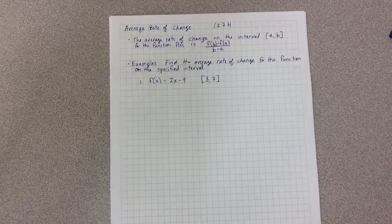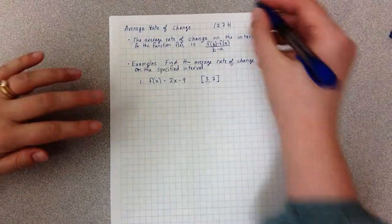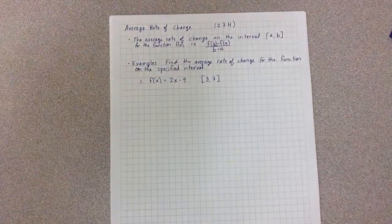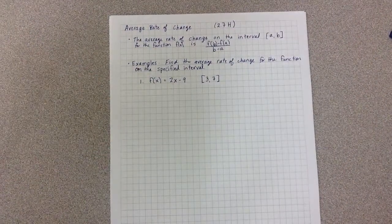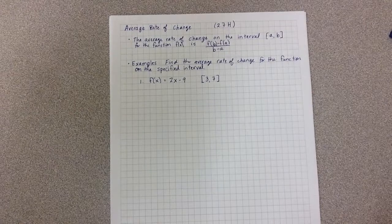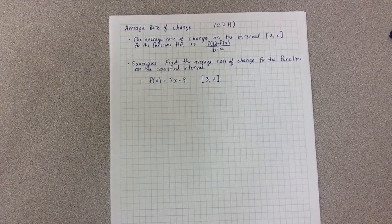These notes are on the topic of average rate of change. This is the topic that is covered in 2.7h. The average rate of change we always talk about as having two pieces.